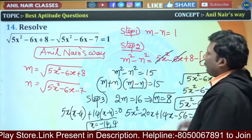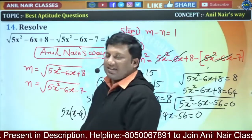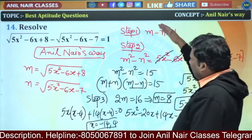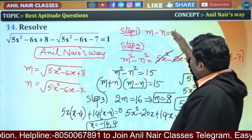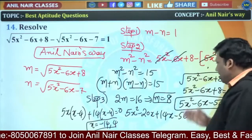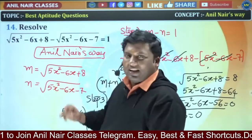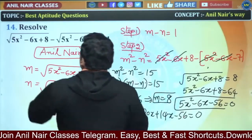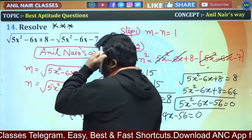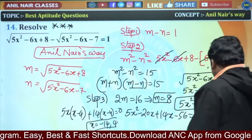m² - n²: the 5x² terms cancel, the -6x terms cancel, and 8+7 = 15. So m+n = 15, m-n = 1, giving 2m = 16, m = 8. Square it and find x — no complex equation, just squares and square roots. Please put a star mark on this question. I've kept one more question so that you can practice it.